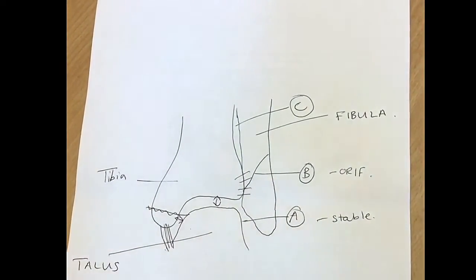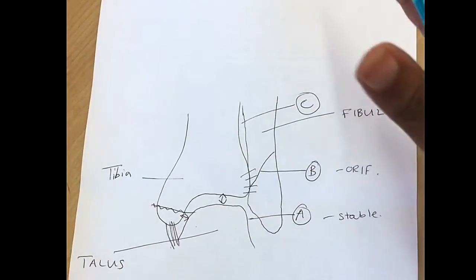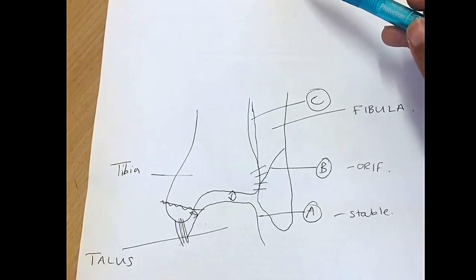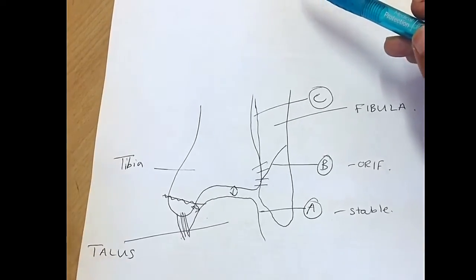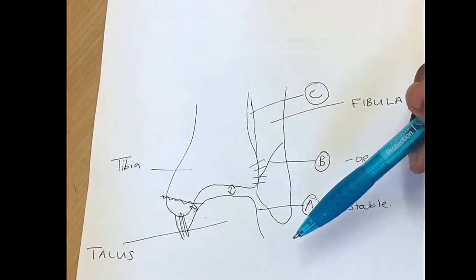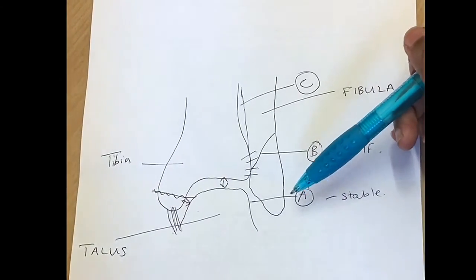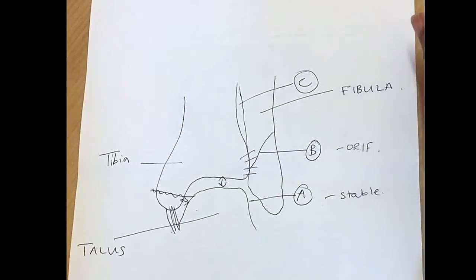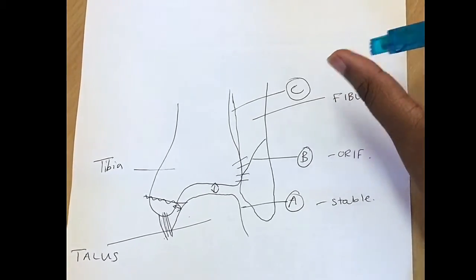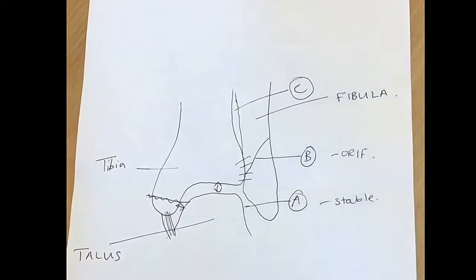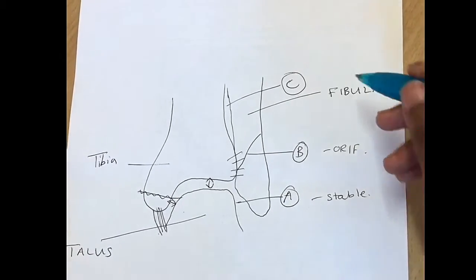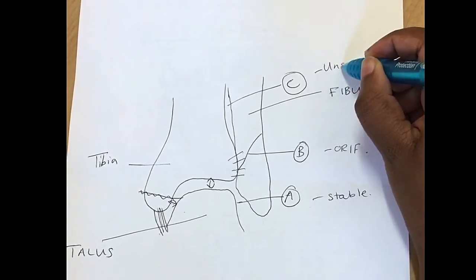With a Weber C fracture, the fracture is above the level of the ankle joint. It can go right up to close to the fibula head, which is why when you're getting an x-ray it is important to include the full length of the fibula. The medial malleolus is usually fractured as well, with concurrent deltoid ligament injury.